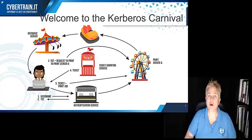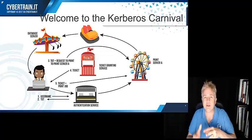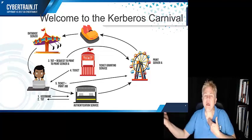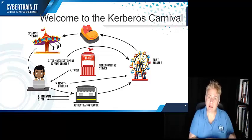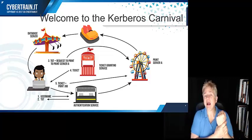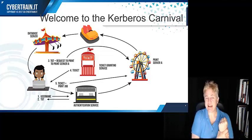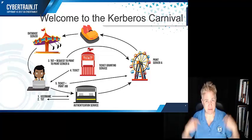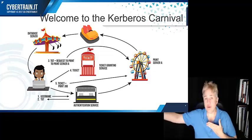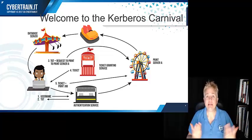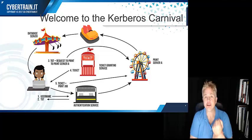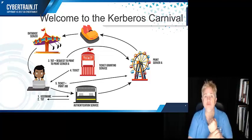The TGT comes back encrypted with Kelly's key, which is based on Kelly's password. Only if I entered my password correctly am I able to decrypt the TGT. So I didn't have to send my password across the network — I only had to be able to decrypt the TGT. Being able to decrypt it guarantees I entered my password correctly. That TGT gets me into the realm, but just like the carnival — I'm in the realm, but what can I do? Nothing, unless I want to ride the rides and get my tickets.